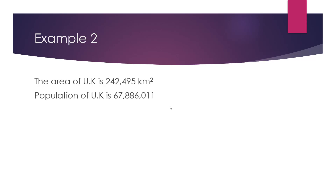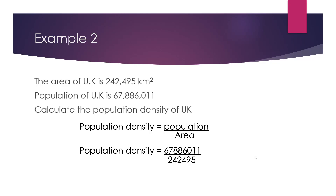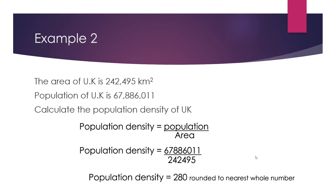The UK has a population of 67,886,011. We're going to work out the population density of the UK using our formula: population density equals population divided by the area. We swap in the actual numbers and put that into our calculator. The population density for the UK is 280 people per kilometre squared, rounded to the nearest whole number.